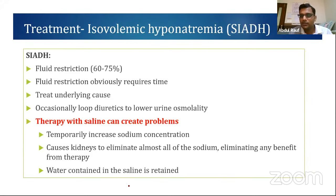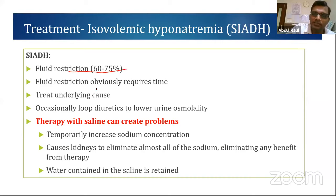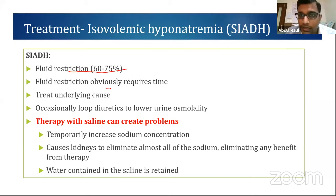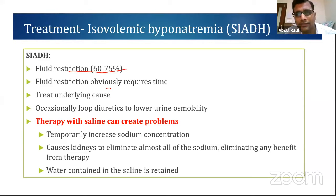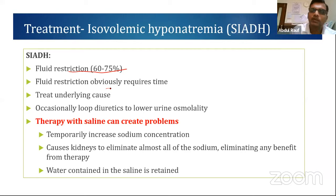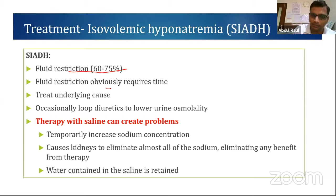For SIADH, the modality of treatment is fluid restriction. For any sick patient — severe bronchiolitis, meningitis, pneumonia, severe asthma — give only 70% (two-thirds) maintenance as isotonic fluid to anticipate and prevent SIADH. Once SIADH is established, restrict fluids to 60–75% and treat the underlying cause. Giving excessive IV fluid to a SIADH patient will only aggravate hyponatremia, because high ADH levels retain the water while excreting the sodium.